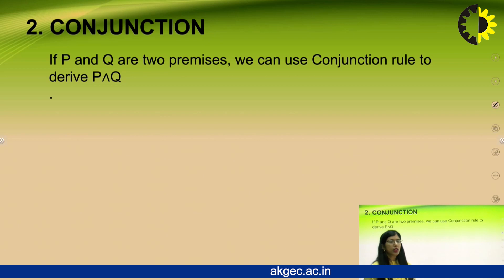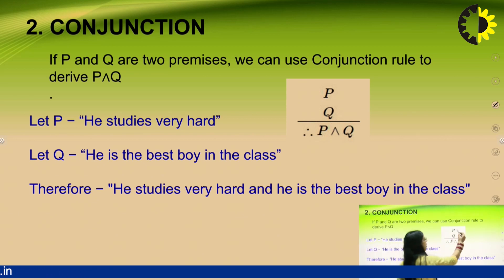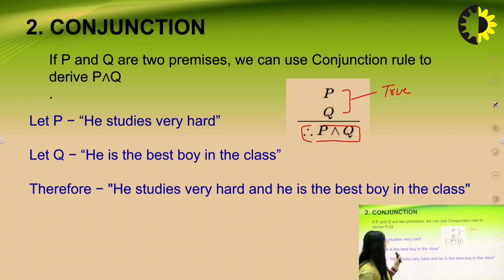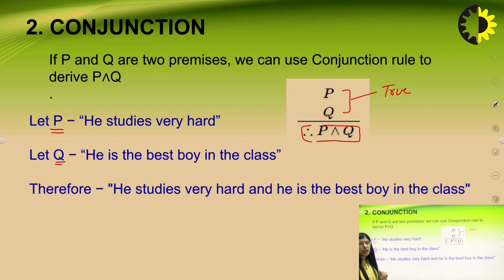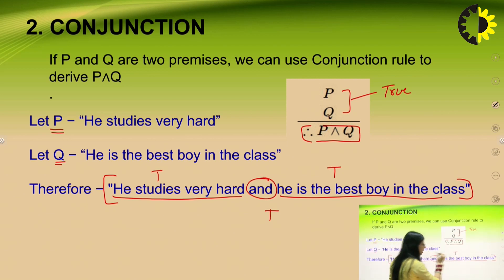The second rule is the conjunction rule. If there are two premises P and Q, we can use the conjunction rule to derive P AND Q. It means if both of these premises are true, then only their result with the AND operation is true. For example, 'he studies very hard' — let's say this is premise P — and 'he is the best boy in the class' is premise Q. When both of these statements are true, then we can say 'he studies very hard and he is the best boy in the class.' This whole conclusion is true because both statements are true.